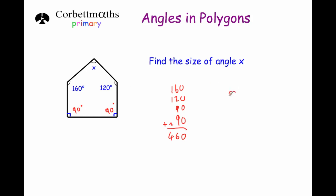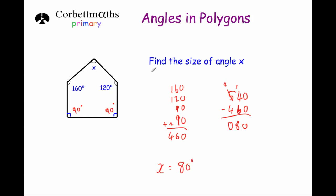Now if we take 460 away from 540 — because that's what the angles in the pentagon will always add up to — we'll find the size of angle x. So 540 minus 460 gives us 80 degrees. So angle x equals 80 degrees.